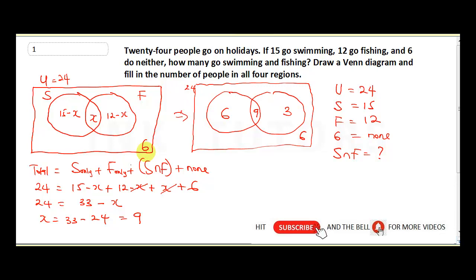So the next one says how many go fishing and swimming? To get the number of people who go for fishing and swimming will be our X, which we have already found. So fishing intersection swimming is X, which is now nine people. So I think everything in this question is solved. So if you treat this question this way, then you will get it right. So we will be going over to the next question.